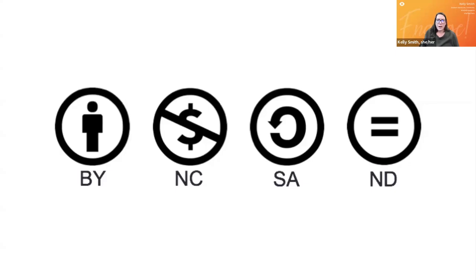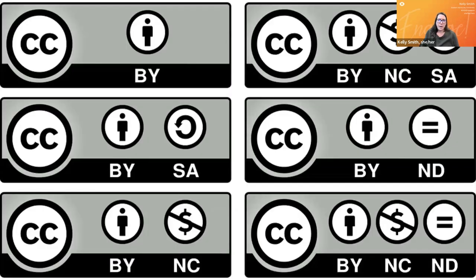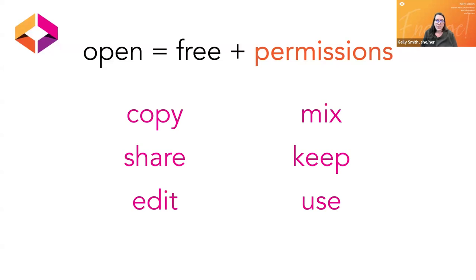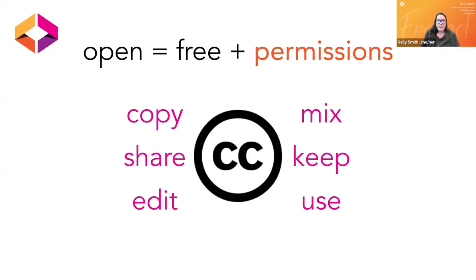The components listed on this slide work together to create the different licenses. Depending on which components you apply, it shows up in different ways, and the slide deck includes links to Creative Commons that you can share with your audience to learn more. Creative Commons grants the ability to update, customize, and improve content. The CC licensing gives you permission to copy, share, edit, mix, keep, or use — and this is how open textbooks and open practices address affordability and culturally inclusive curriculum, because we can adapt sources to our local context. This is what makes OER so powerful.